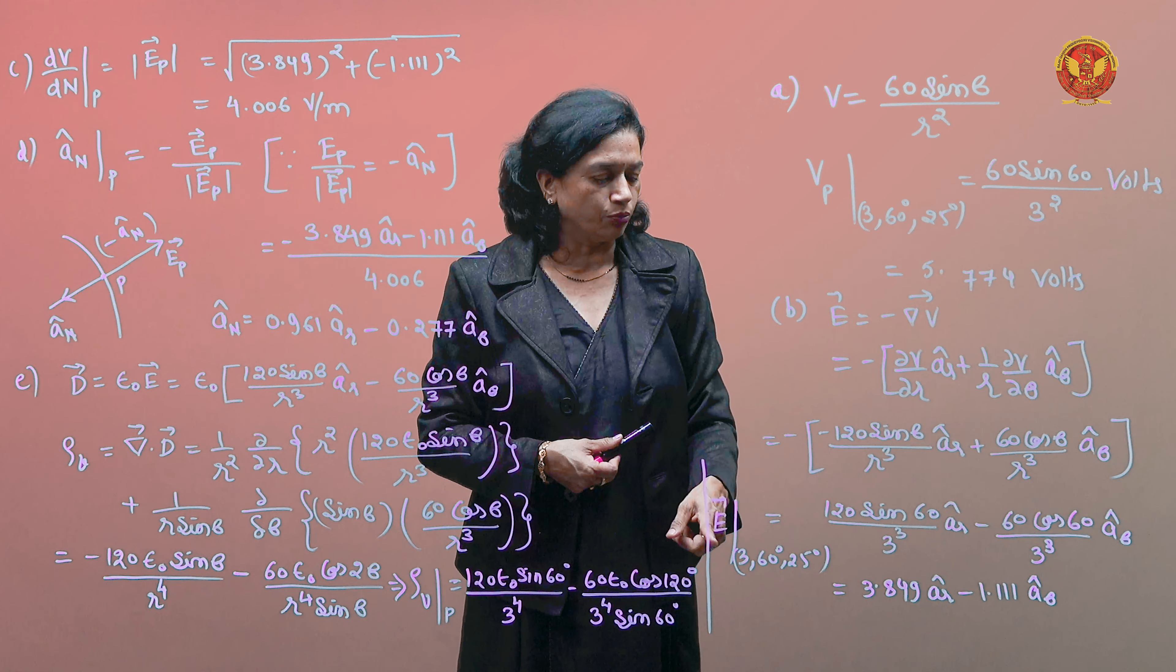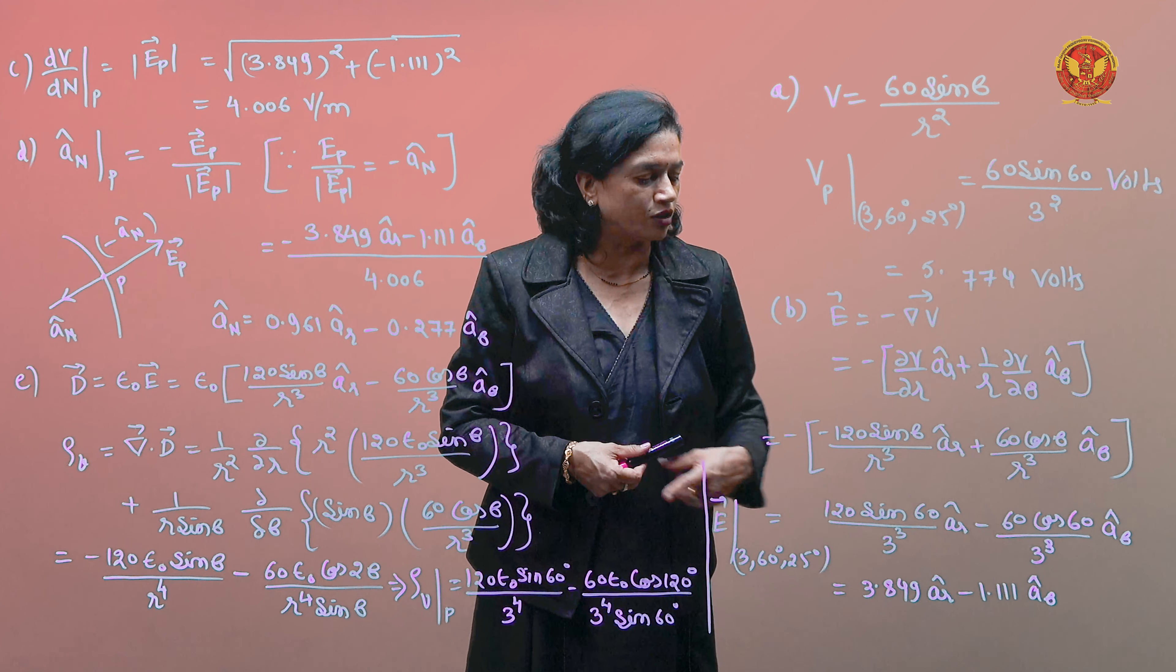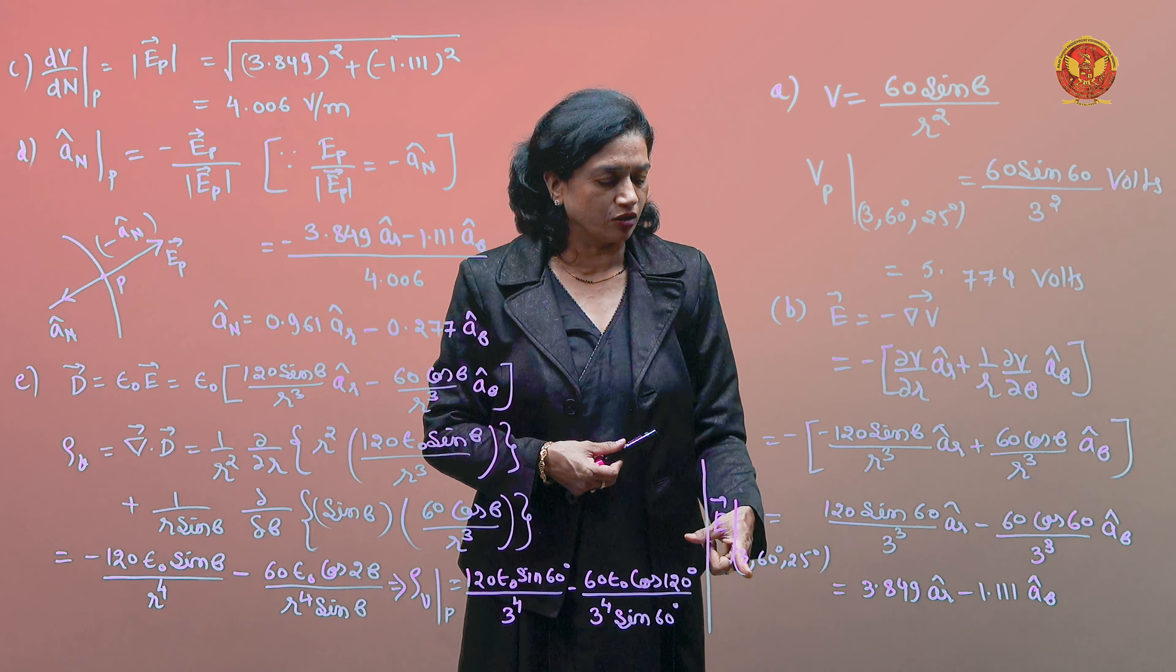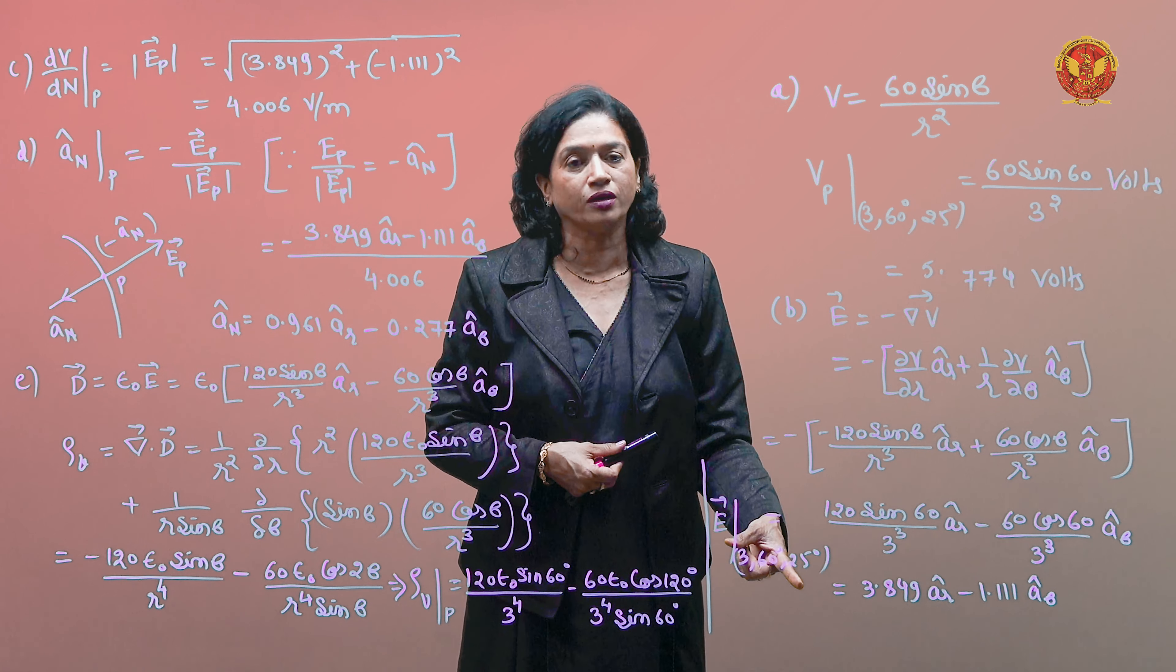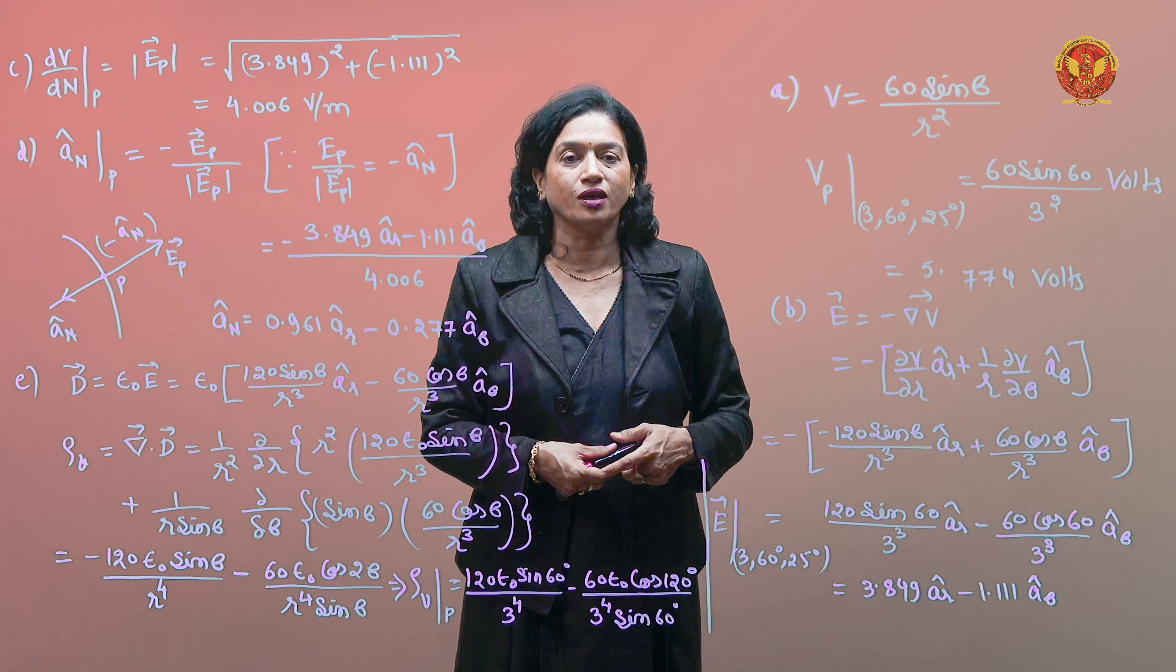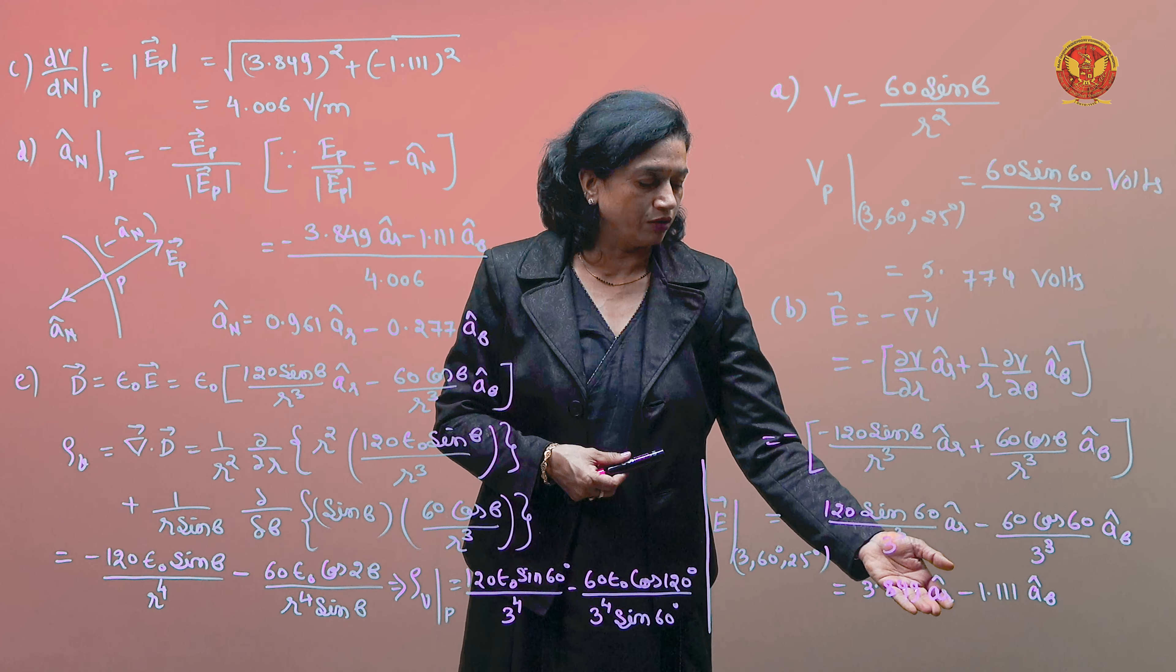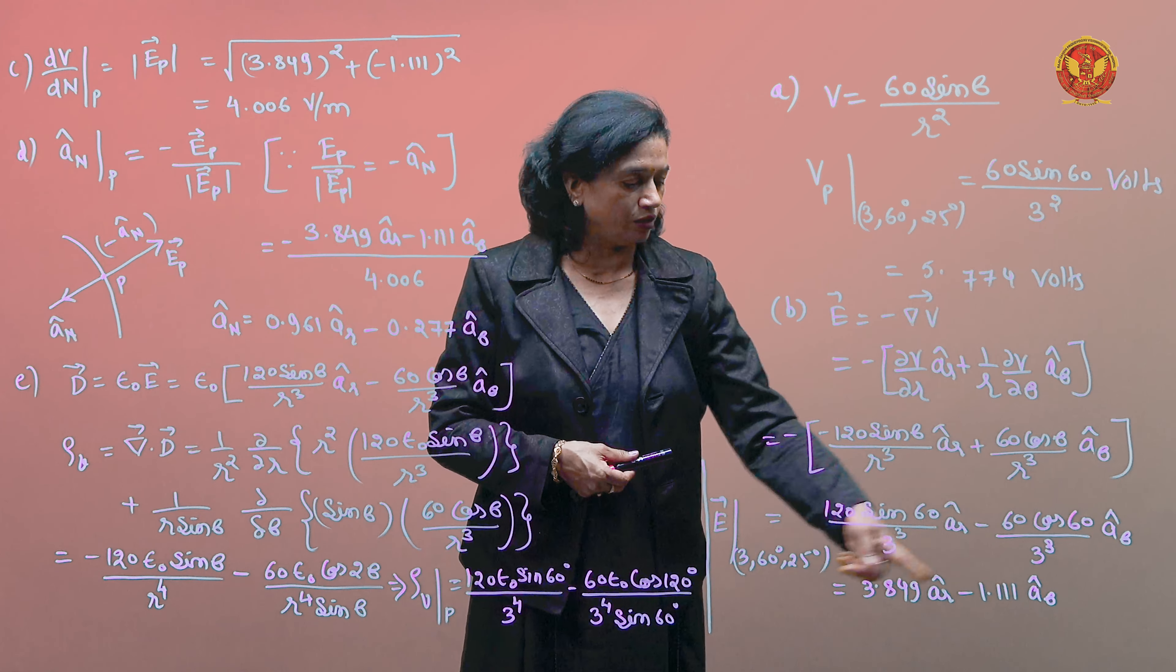Then we will find out del V by del theta. Now the del V which came out was found, which means two terms are ar and a theta.